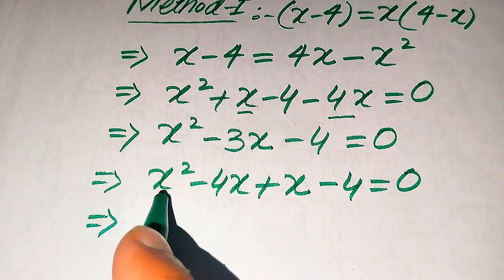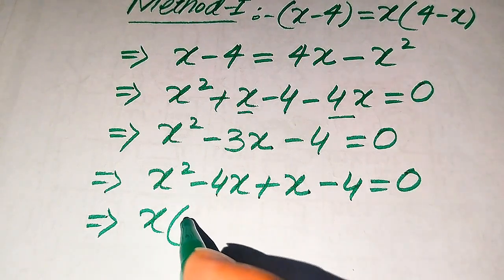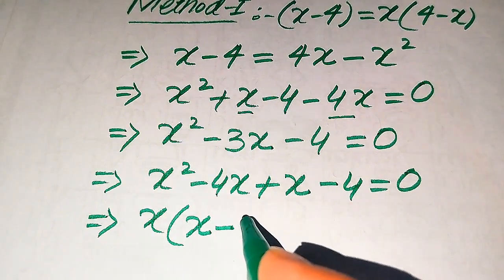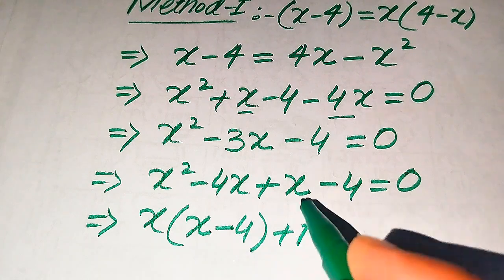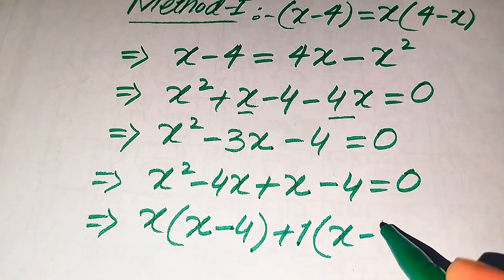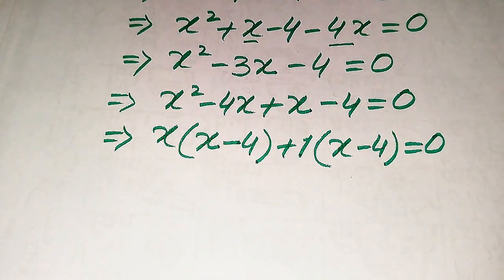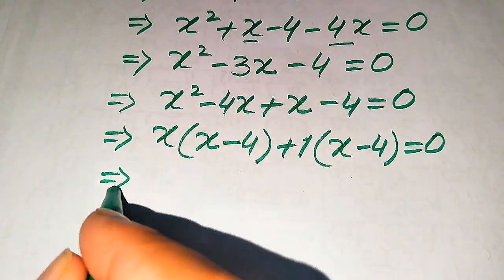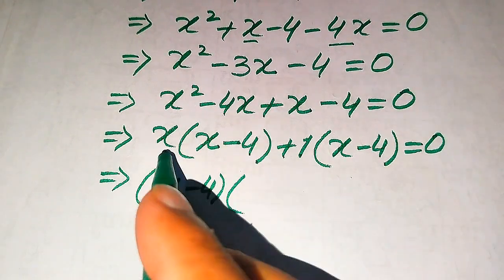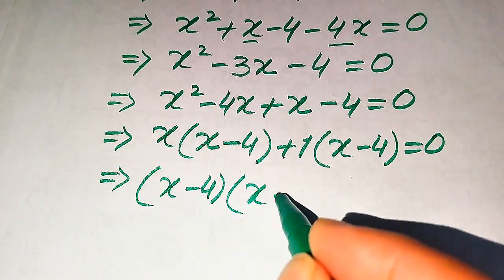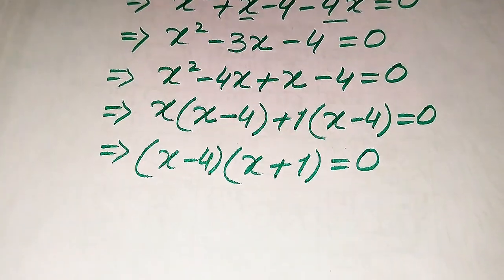The first two terms involve x, so we take x common to get x(x minus 4). The last two terms share the factor (x minus 4), so we take 1 common to get 1(x minus 4). This gives (x minus 4)(x plus 1) equals 0.